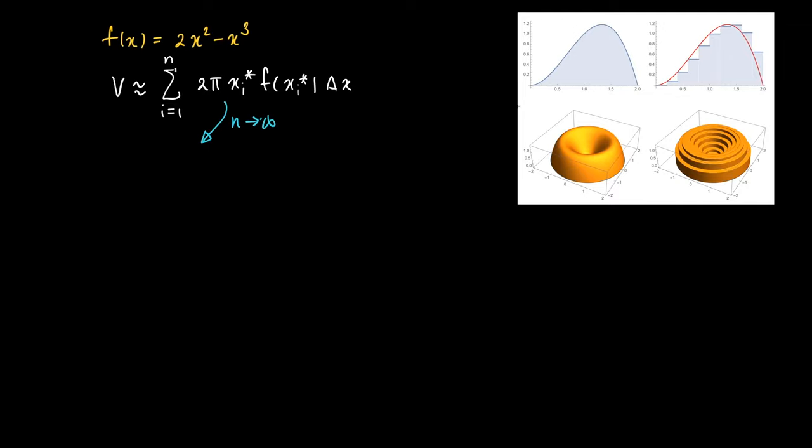And we may calculate the volume precisely by the definite integral from 0 to 2, which are the natural bounds of the figure here. So the radius is taken from 0 to 2, and 2π x f(x) dx.